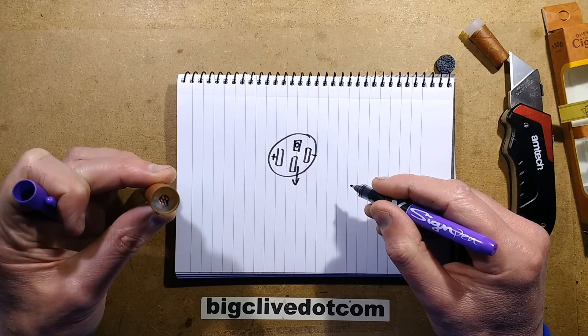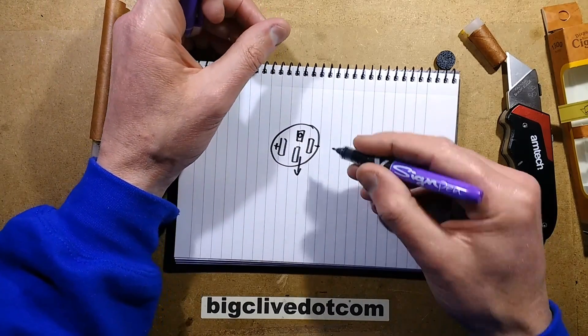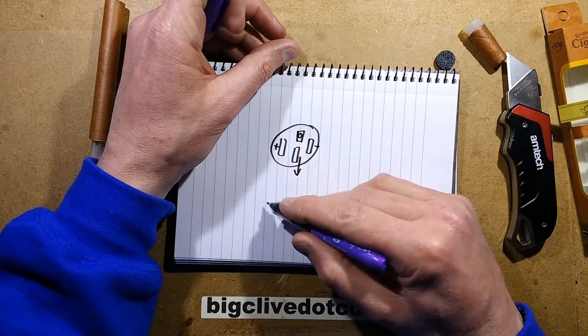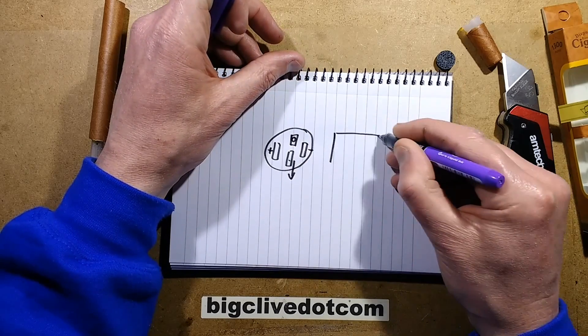And you've got plus, minus, and output to the actual heating element. Not necessarily in that order. Yes, actually more or less, yes it is actually in that order. So what you have, the heating element is connected to perhaps the positive on one side, and then it's switched to this middle pad.